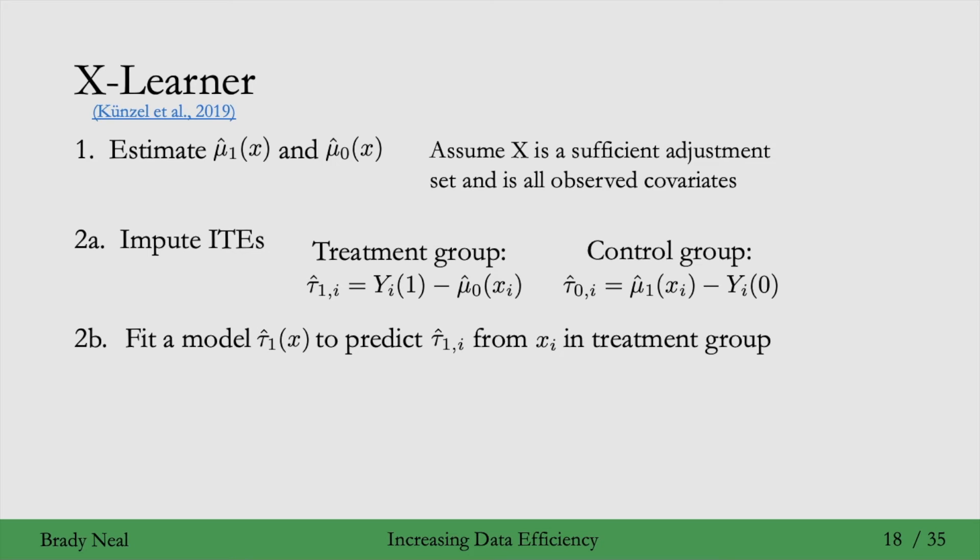This model tau1 hat is going to use all of the data. It already used all of the control group data here, and now that we're using all of these imputed ITEs, where we use all of the treatment group outcomes, we're going to end up using all of the data in total.